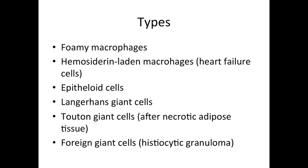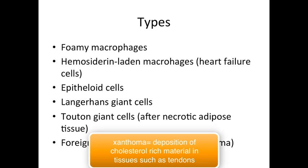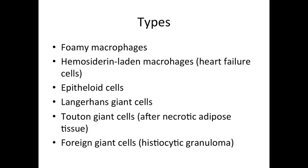Another type of macrophage is the Touton giant cell. These are seen after an infarction of your adipose tissue, causing it to become necrotic. This can be seen especially in some xanthomas — xanthomas being cholesterol-rich depositions in tendons.